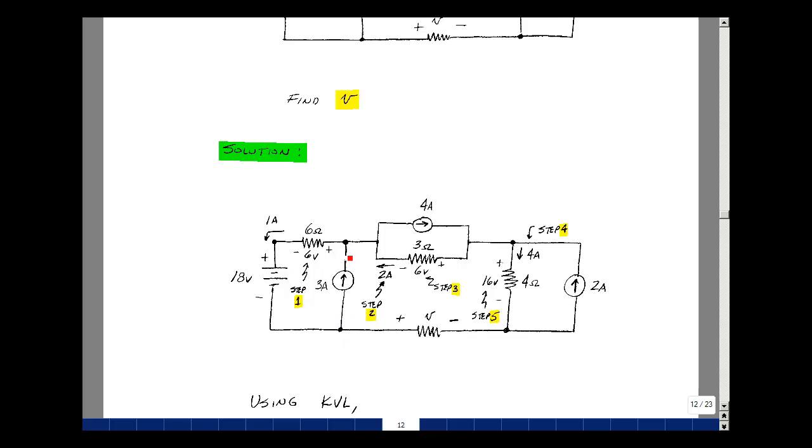I have 3 amps entering. I have 1 amp leaving. I have 4 amps leaving, so I need 2 more amps to enter, so that would make this current 2 amps. In other words, 3 amps plus 2 amps is equal to 4 amps plus 1 amp.